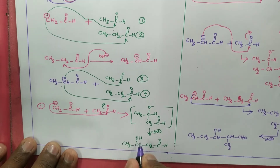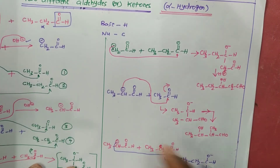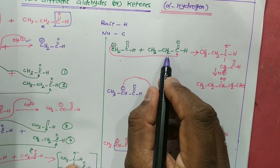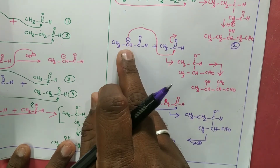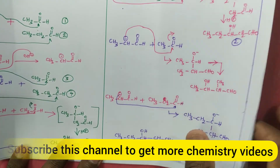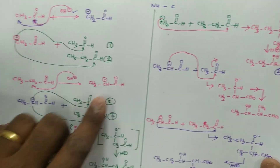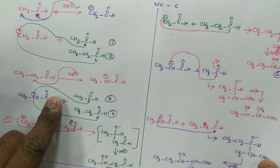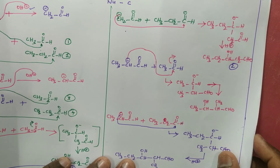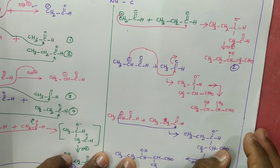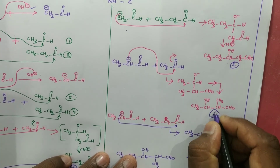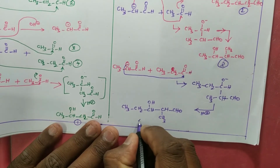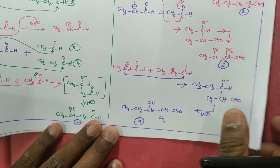So in total we get four cross aldol products. Product one, product two, product three, and product four are all formed. The nucleophiles are formed by the OH⁻ base eliminating the alpha hydrogen as water, generating the enolate, which then attacks the carbonyl carbon of either reactant.